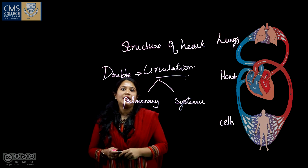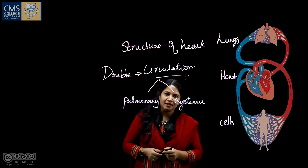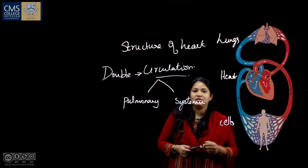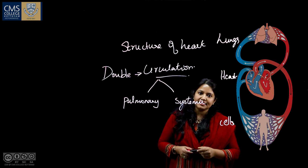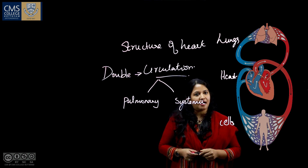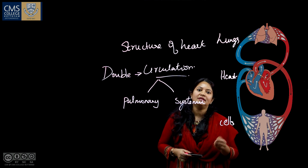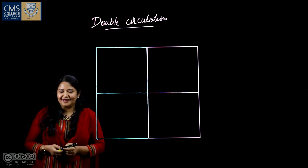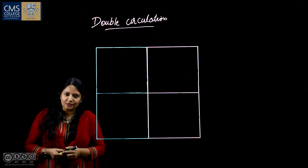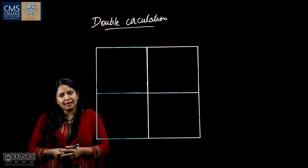Double circulation consists of pulmonary and systemic circulation. In this function, three organs are connected: the first major organ is the heart, the second organ is the lungs, and the third organ is the different cells in our body. The heart is the major organ in the double circulation.